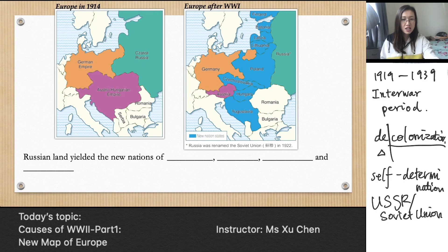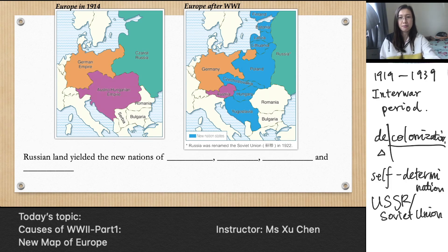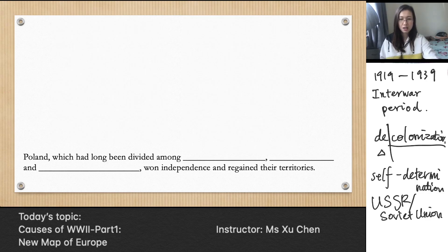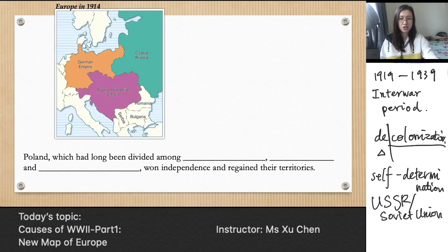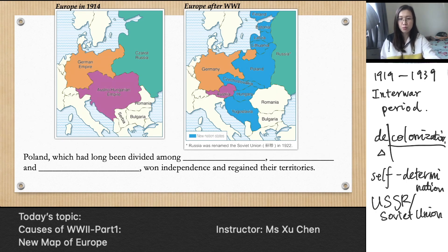Russian land yielded the new nations of Finland, Estonia, Latvia, Lithuania, and Poland. Among all these new nation-states there is one special case — Poland. For all other nations it was the first time in history their name appeared on the map as an independent country. But Poland used to be a country; due to its decreasing power it had long been divided among the German Empire, Tsarist Russia, and the Austro-Hungarian Empire. After the First World War, thanks to Wilson's self-determination idea, Poland finally won independence and regained its territories.